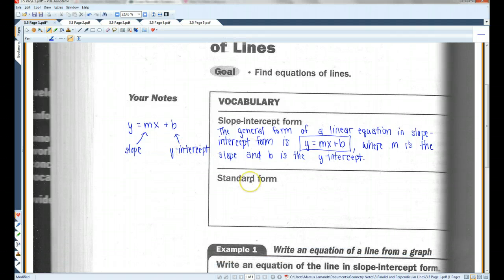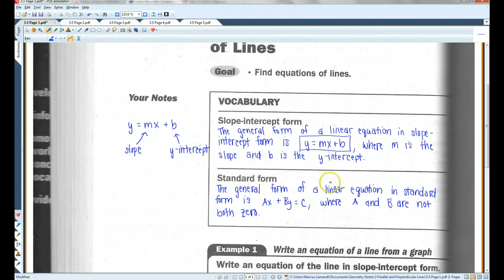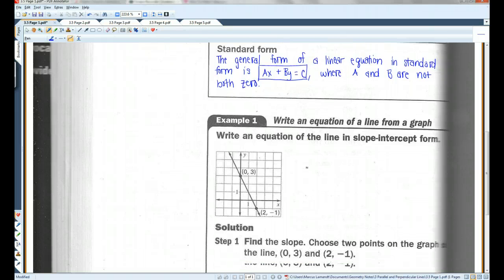Another form you're going to see a lot is standard form. The general form of a linear equation in standard form is ax plus by equals c, where a and b are not both 0. You will frequently be given equations in this form, and you will have to convert them into this form. Okay, so it's good to be familiar with both of them. We will be using this one a lot more than this one.